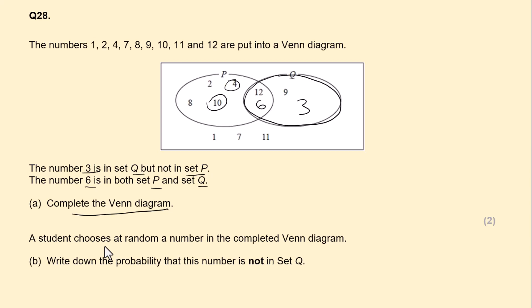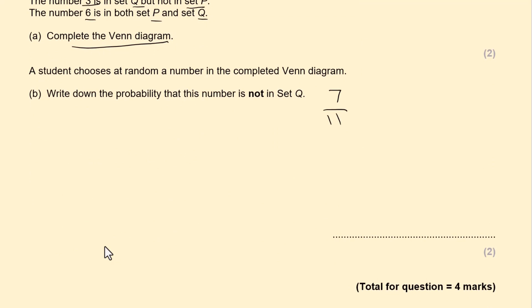So not in set Q. So this is all set Q. So how many numbers are not in set Q? So we have 1, 2, 3, 4, 5, 6, 7. So we have 7. Out of 11. How many do we have? 1, 2, 3, 4, 5, 6, 7, 8, 9, 10, 11. Out of 11. Including the two numbers that we added at the start. So 7 out of 11 is the final answer. Total for this question is 4 marks.